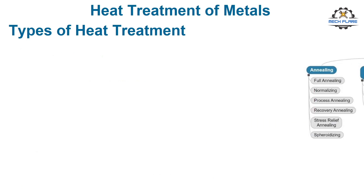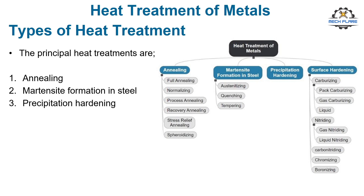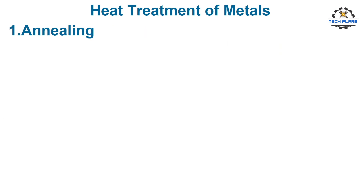The principal heat treatments are annealing, martensite formation in steel, precipitation hardening, and surface hardening. Let's discuss all one by one.